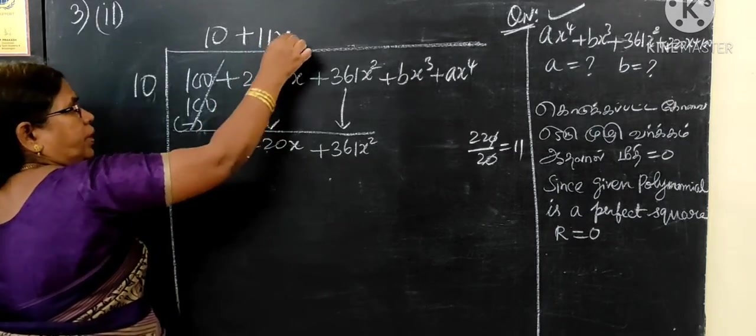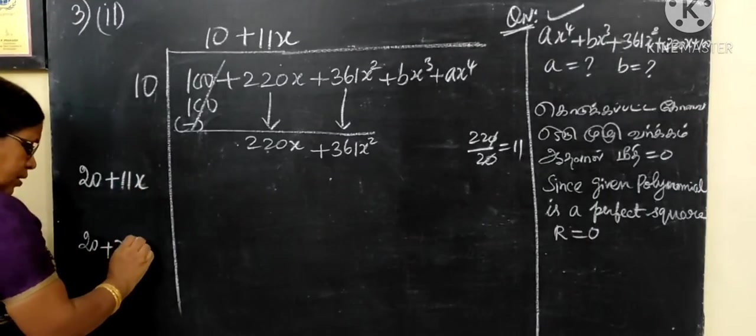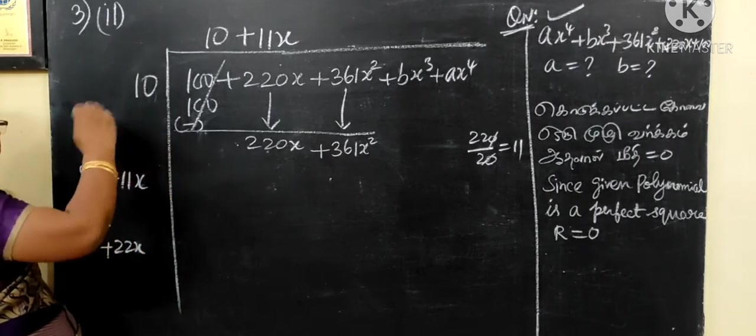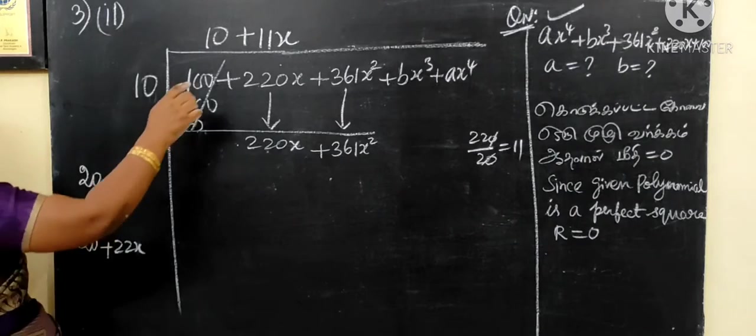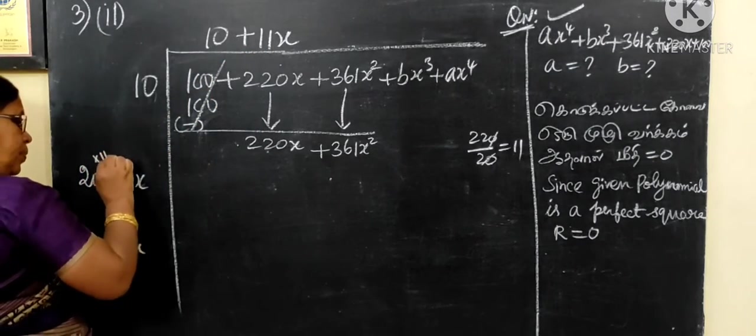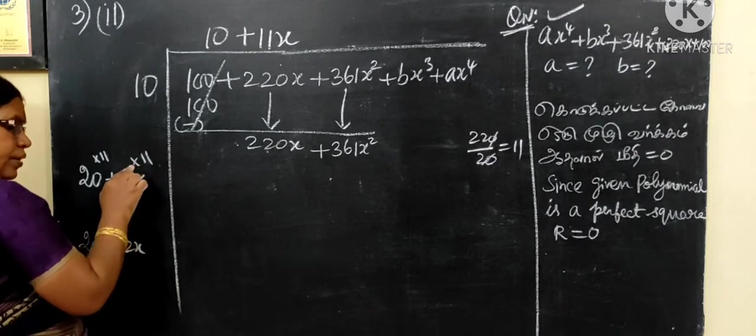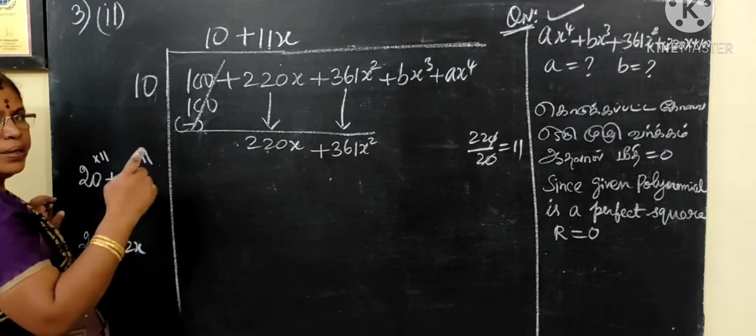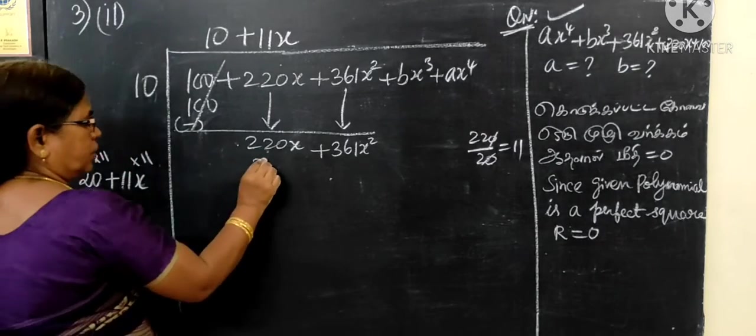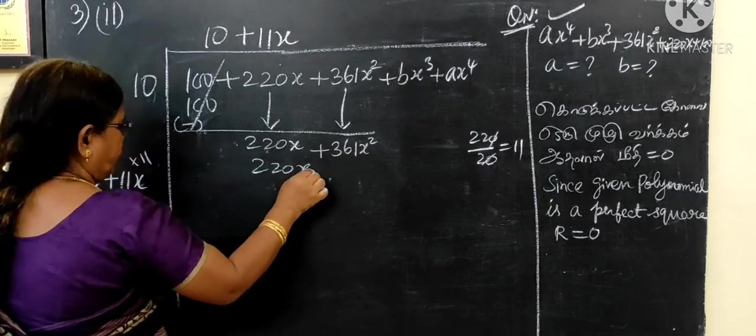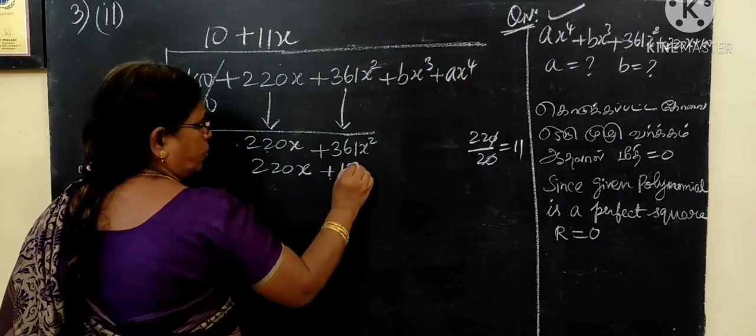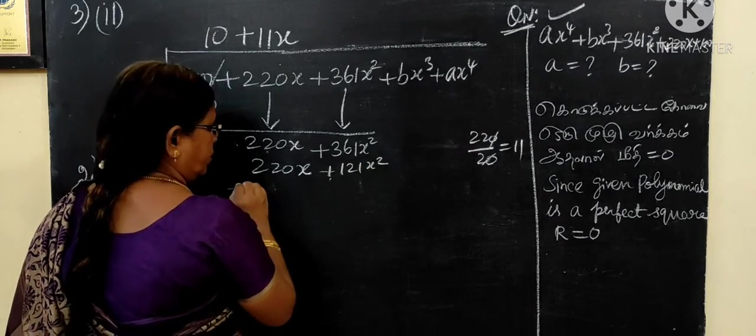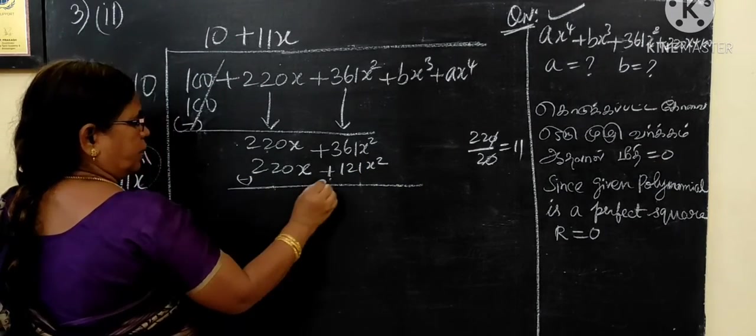This is x. This is x squared. You can start to do x squared. Now the number is 4.